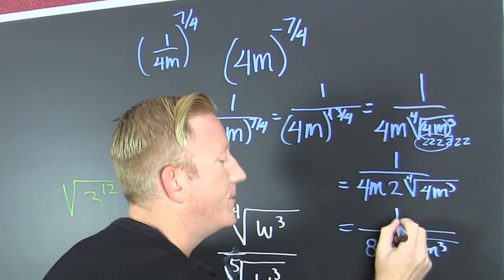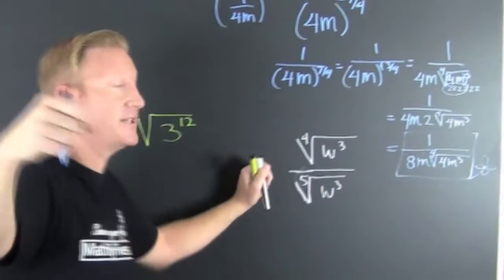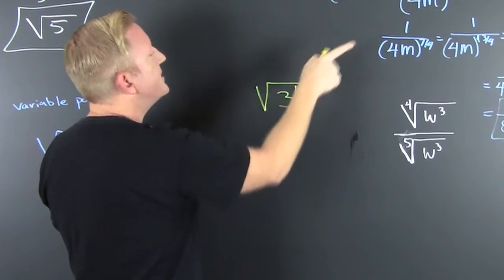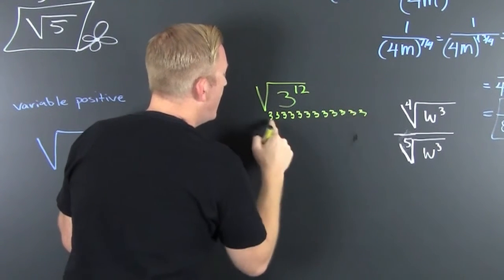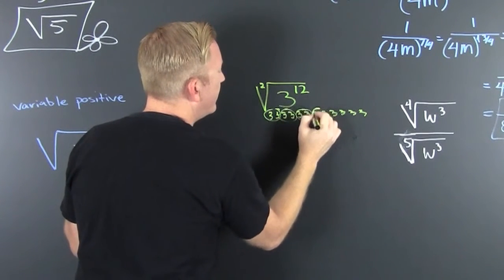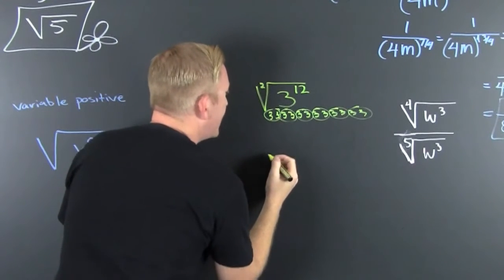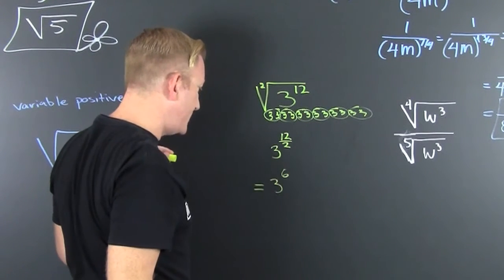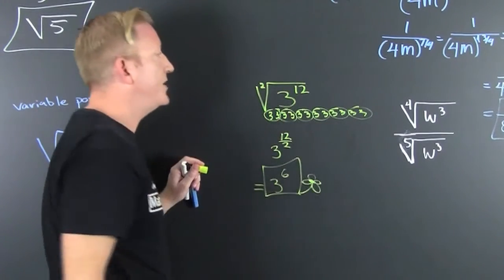Hopefully this next one isn't so hard. There are 12 threes — I could write out 3 times 3, twelve times over. Since there's a 2 in the index, for every pair, one comes out: that's 6 pairs, so 6 of them come out, giving 3 to the 6th. We can also see this directly: 3 to the 12 over 2 equals 3 to the 6th power.